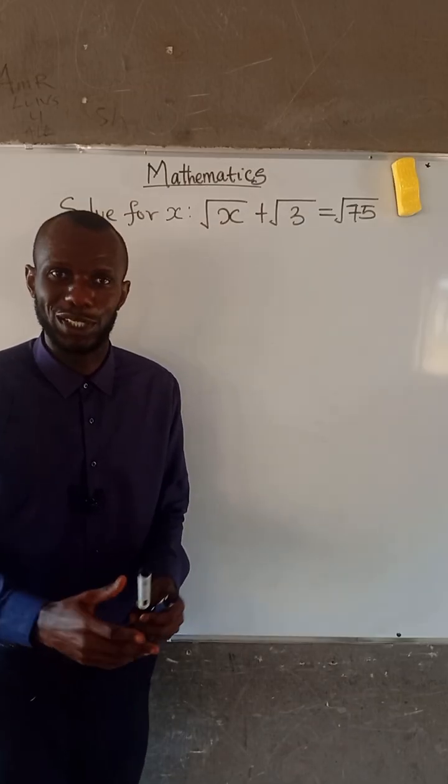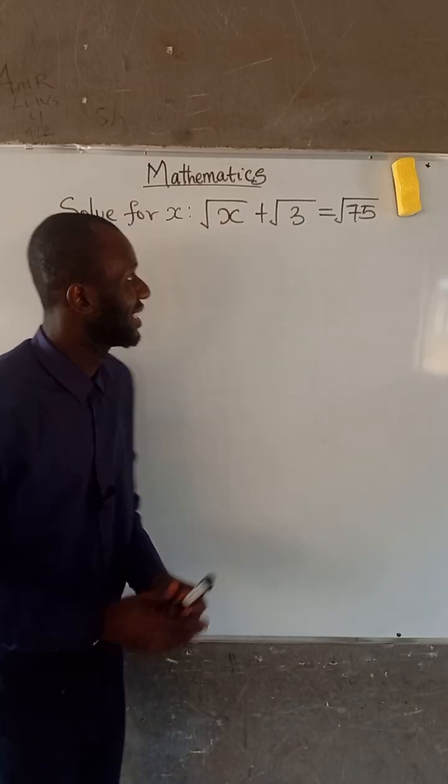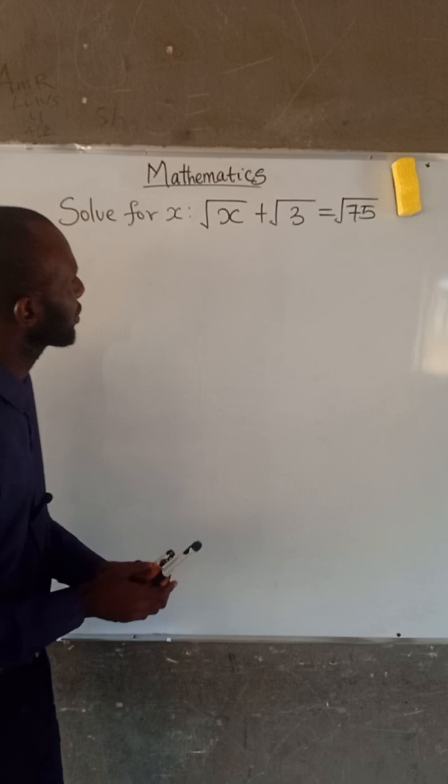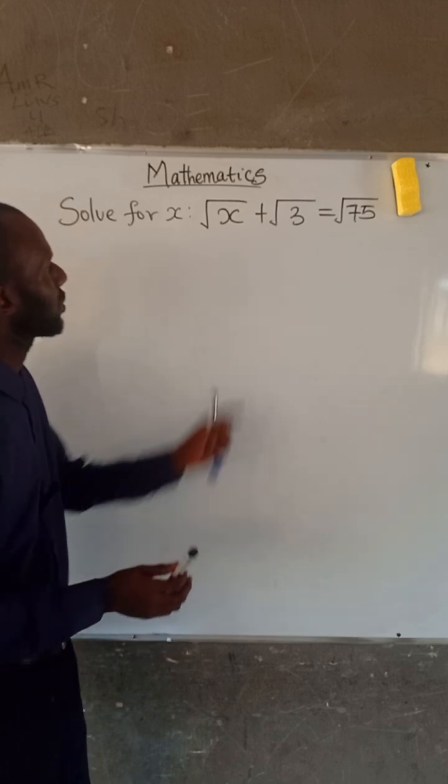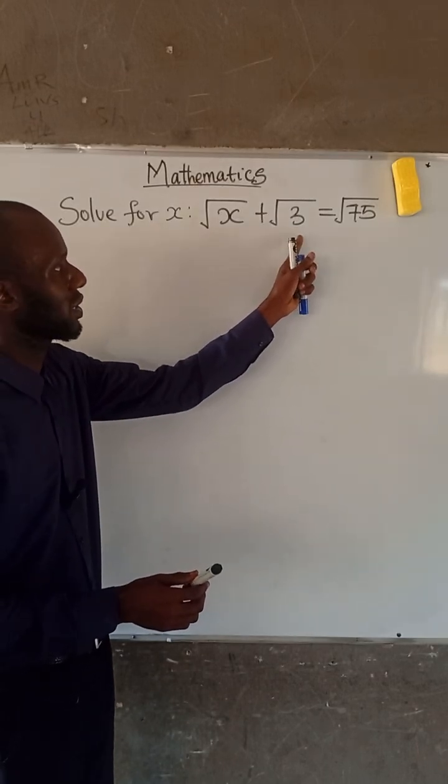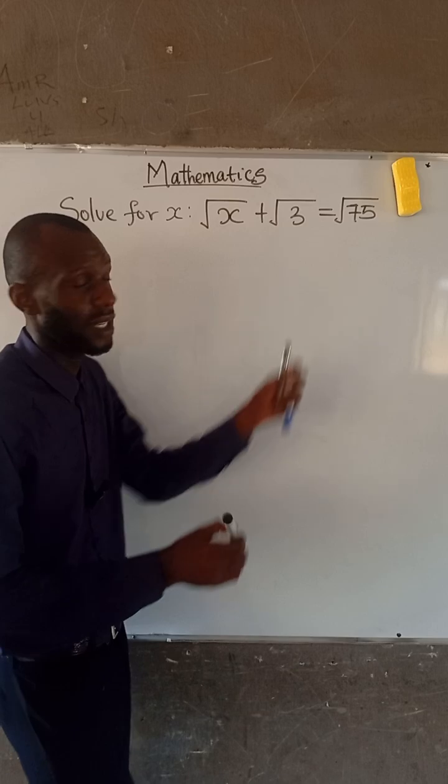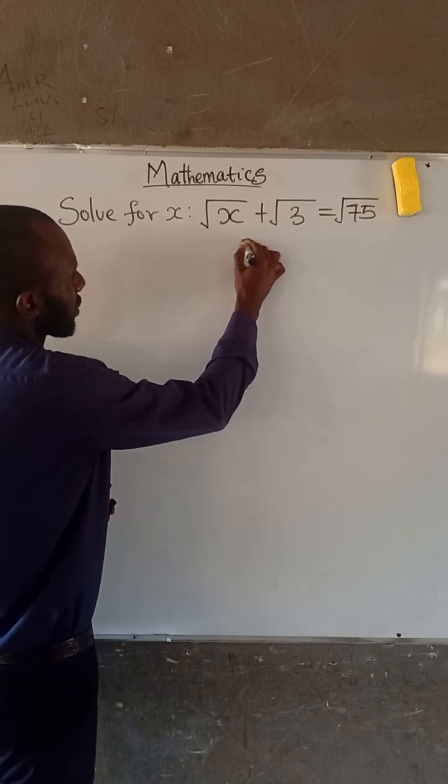Hello everyone, welcome to Radiant Minds Academy. In this video, we are asked to solve for x, given that root x plus root 3 is equal to root 75. So let's get started.